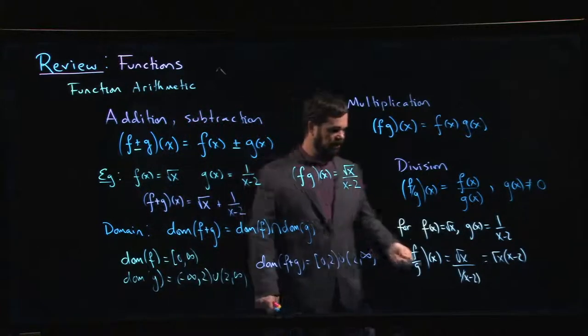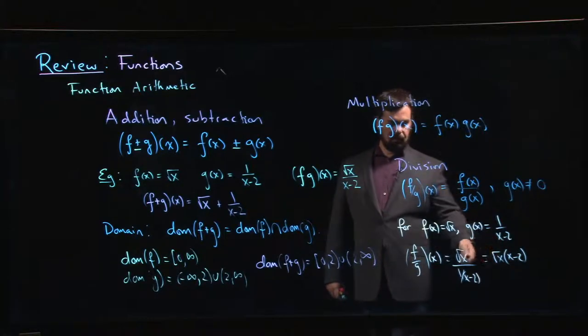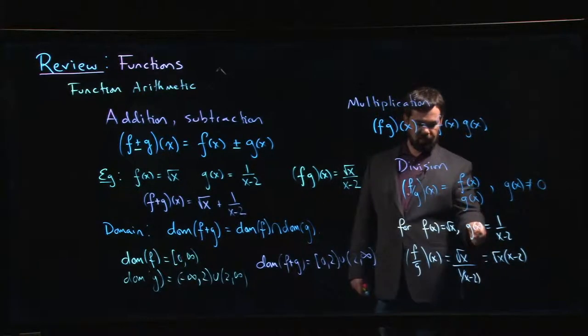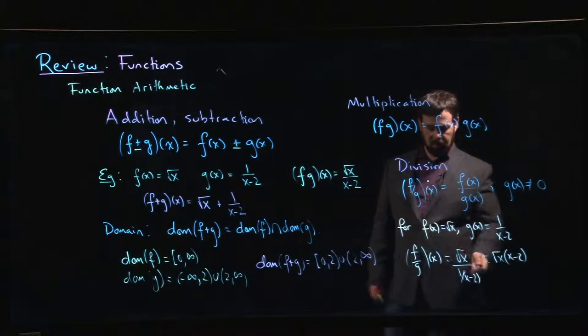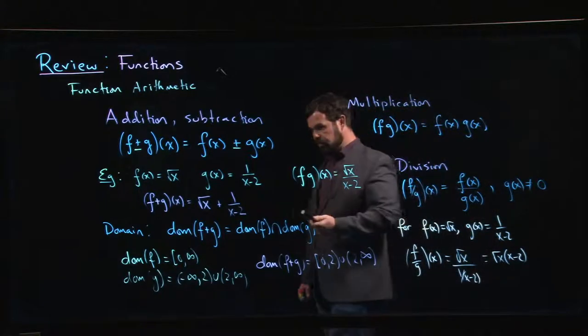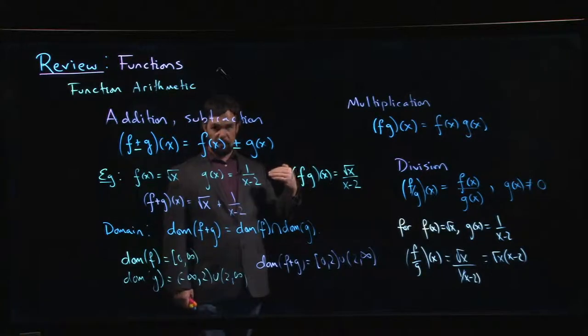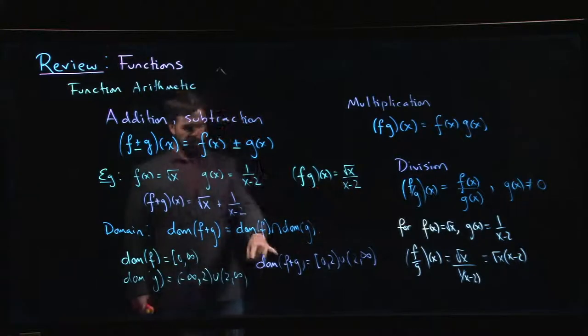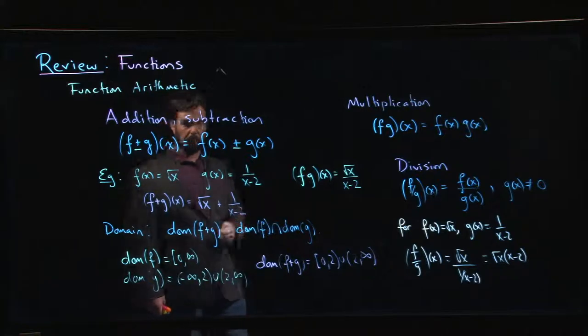Even though this simplified form here is defined when x equals 2, the way we arrived at this was we started with this function g of x and we divided by it. And g of x is undefined when x is equal to 2. So even though the final expression does appear to be defined at 2, if we are arriving at it through this division process, you can't divide by a number that's undefined. So the domain there would still be the same domain that we encountered for addition or subtraction or multiplication.